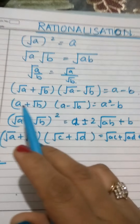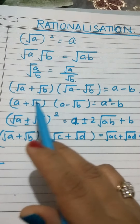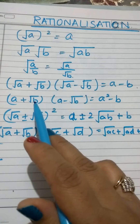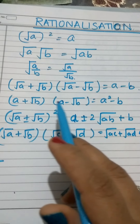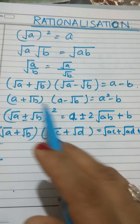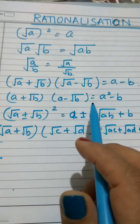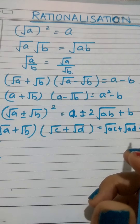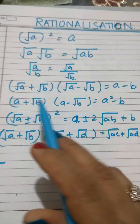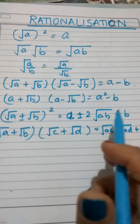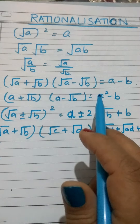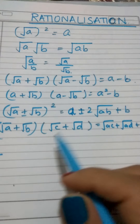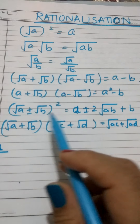Similarly, if one number is rational and one is irrational, after multiplying, since this will again be an (a+b)(a−b) form, it becomes a² − b². So the rational part is squared, and for the irrational part the root disappears and it becomes b.